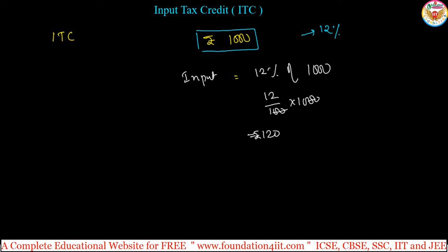Now, by getting profit or reselling to the next customer, the amount is 1500 with again the same 12%. In this case out of 1500 we can calculate the tax. This is the output.